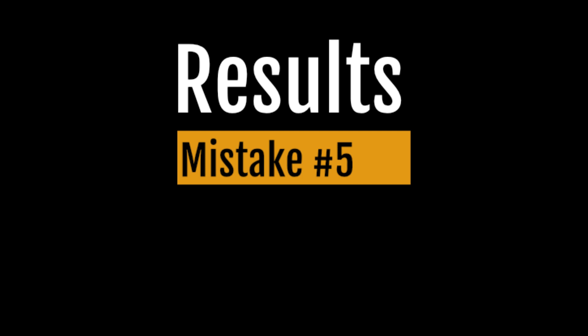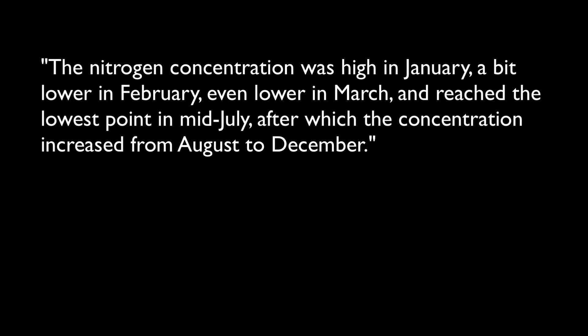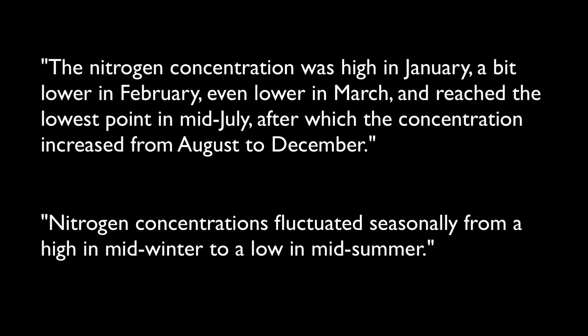One of the most common mistakes in writing the results is to repeat in excruciating detail what is shown in tables and figures. For example: 'the nitrogen concentration was high in January, a bit lower in February, even lower in March, and reached the lowest point in mid-July, after which the concentration increased from August to December.' Instead, describe general patterns in the data: 'Nitrogen concentrations fluctuated seasonally from a high in mid-winter to a low in mid-summer.' Let the reader look at the figure to get the details.